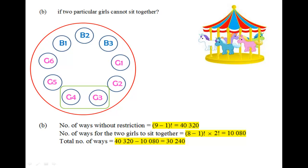Therefore, we have 8 minus 1 factorial permutating all the 8 units. But within this green box here, I can still permutate the two girls, which is 2 factorial. Therefore, the total number of ways would be the number of ways without restriction, minus away the number of ways for the two girls to sit together, giving us this as the answer.